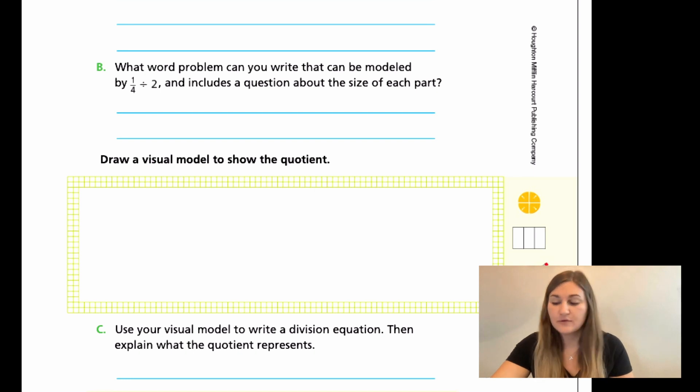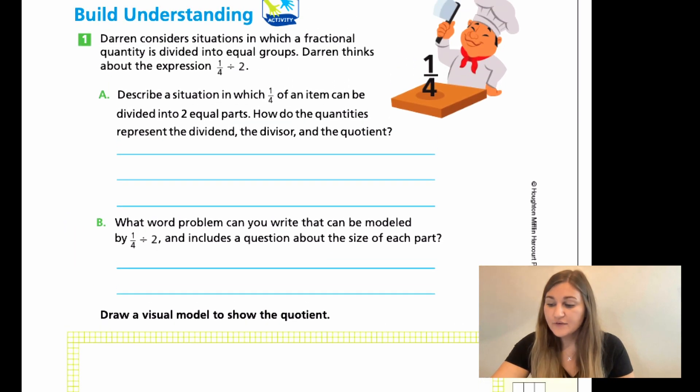All right, great work. Let's go ahead and go through this. So for A, it says describe a situation in which 1/4 of an item can be divided into two equal parts. As soon as I start talking about food, I always go to steak, right? I love me some steak. So that's what I went with. I decided to kind of veer off of what the teacher's manual said. So I have 1/4, what this would represent is 1/4 of a pound. And I'm splitting it into two, right? Me and my husband, we're going to split 1/4 of a steak. So that's 1/4 of a pound being divided into two.